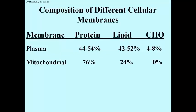The mitochondrial membrane has no carbohydrate. It's made up principally of protein and lipid. 76% of this mitochondrial membrane is protein — it is rich in the proteins of the electron transport complexes, concentrating those proteins there to enable efficient respiration. Only 24% of this membrane is lipid.